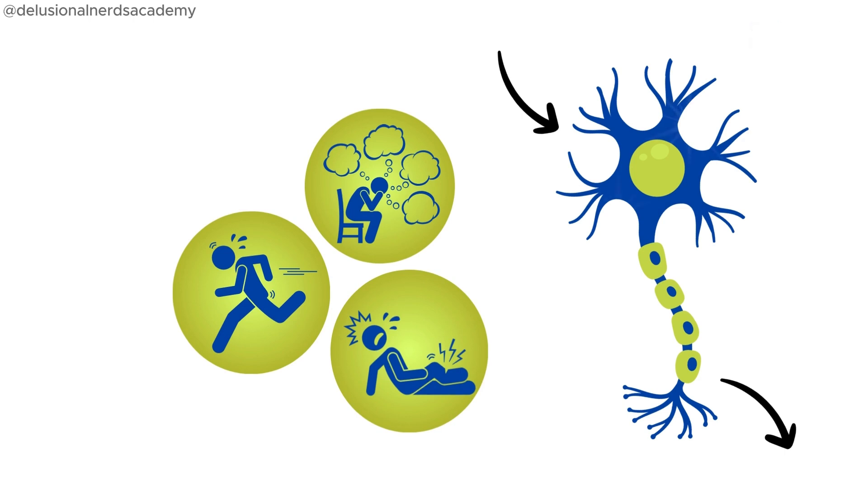These cells communicate through electrical impulses. The two main states are the resting potential and the action potential.